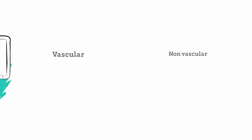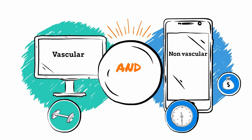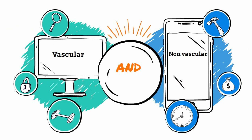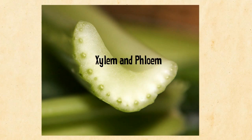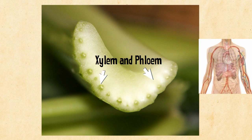Two major categories are vascular and non-vascular plants. Vascular plants have vascular tissue which allows them to grow larger in size. There are two types of vascular tissue: xylem, which transports water throughout the plant, and phloem, which transports sugar throughout the plant. Think of vascular tissue as our veins and arteries, and this allows some vascular plants to grow very large.